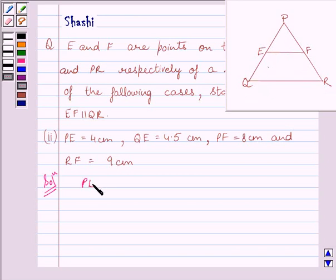So we can write PE upon EQ is equal to 4 upon 4.5 which is further equal to 8 upon 9. So we get PE upon EQ is equal to 8 upon 9.